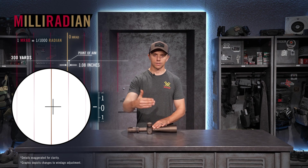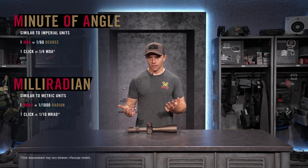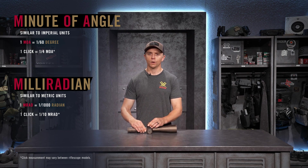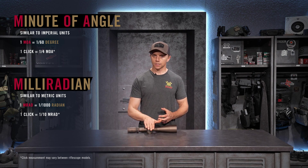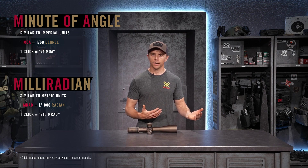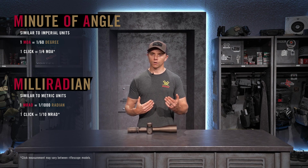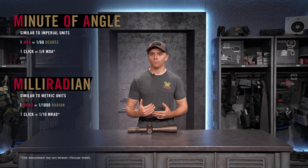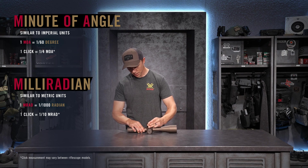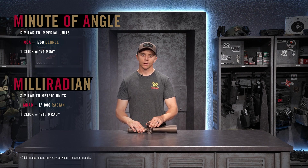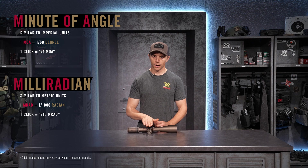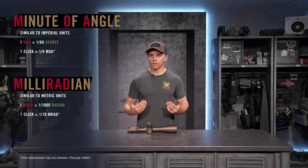Some people's minds work best in different angular units of measure. Think about how you're going to apply them on the range. If your shooting partner asks you to dial 3.5 mils up in elevation, you can look at your elevation turret and dial to 3.5, or you can count out 35 clicks using the tenth-of-a-mil adjustments. The base-10 system is a little bit easier to mentally digest.